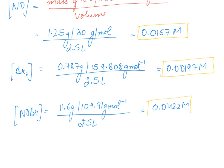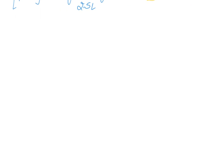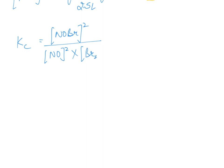Now we have all the concentration values and just need to put them into the Kc formula. So Kc equals concentration of NOBr squared divided by concentration of NO squared multiplied by concentration of Br2. Substituting: 0.0422 squared in the numerator, and 0.0167 squared multiplied by 0.00197 in the denominator.